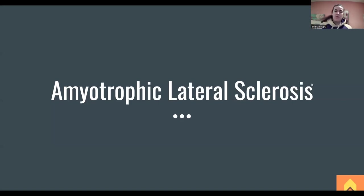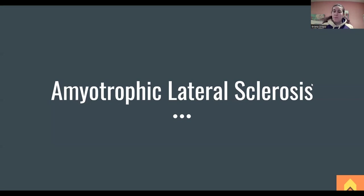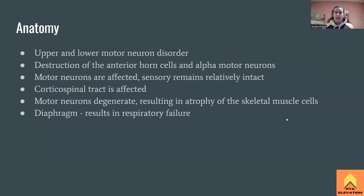Today we're going to talk about ALS, called amyotrophic lateral sclerosis — 'a' meaning none, 'myo' being muscles, 'trophic' being the function, so the muscles just stop working. This is going to affect motor neurons in the lateral columns of the corticospinal tract, where our main motor neuron track is.